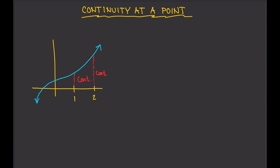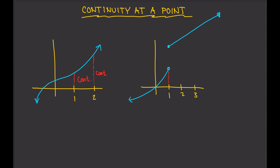Now let me give you an example of a function that is not continuous at a certain point. Let's say this is 1 right here, and then this is 2, this is 3. The question is, is this function continuous at x equals 1? So you are going to look at x equals 1 and examine the function at that point. There's something wrong here — there is a jump. The function jumped. Therefore, this function is not continuous at x equals 1, because there was a jump.